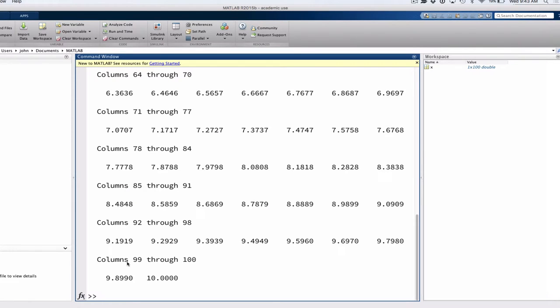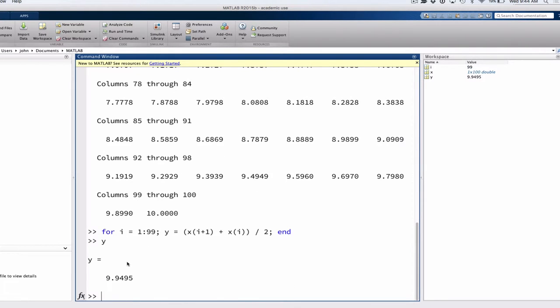And so what you're going to be tempted to do would be probably to write a for loop, right? You're going to say for i equals 1 to 99, because if I have a hundred corners, then there's 99 cells, right? So I'm going to find the centroid of each cell. So I'm going to go from 1 to 99, and I'm going to say, you know, y, which we'll say is the centroid, is equal to x i plus 1 plus x i divided by 2, right?